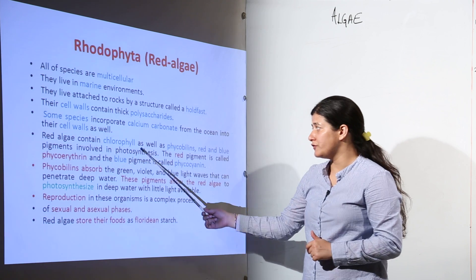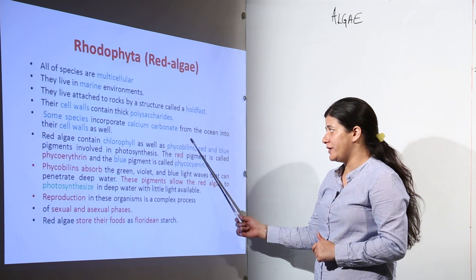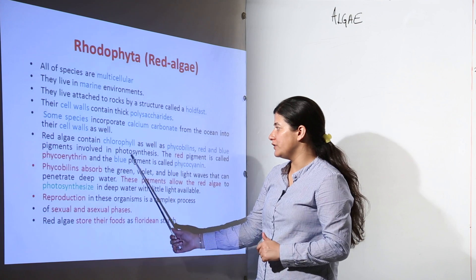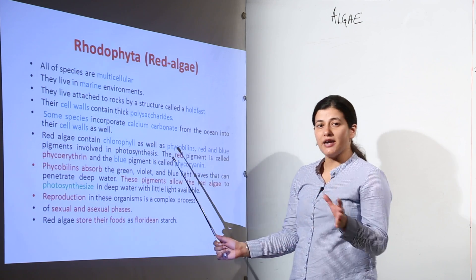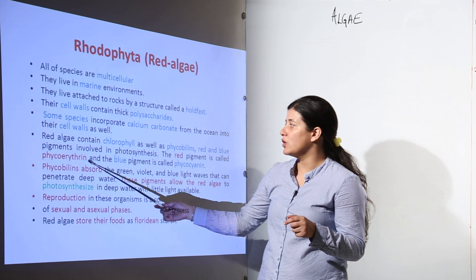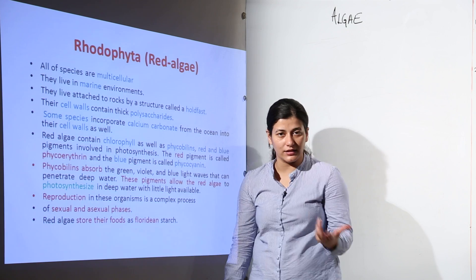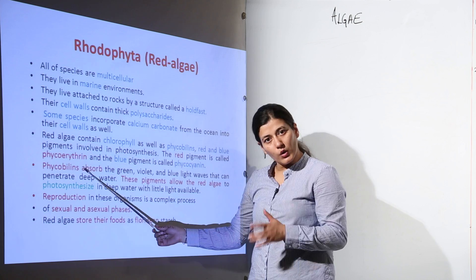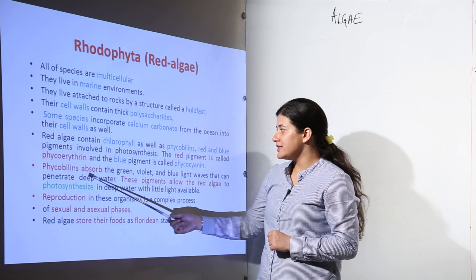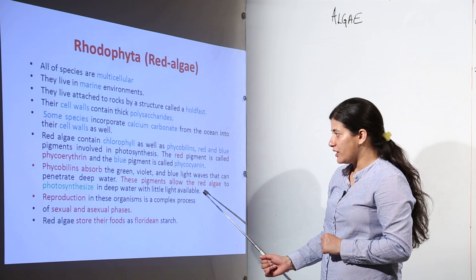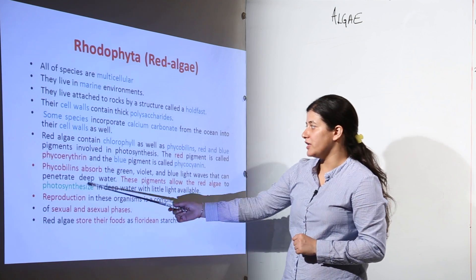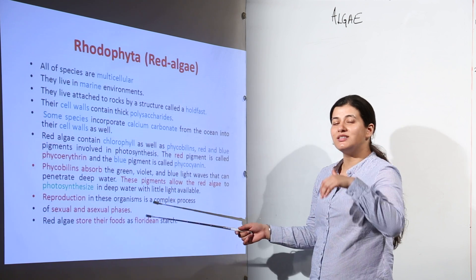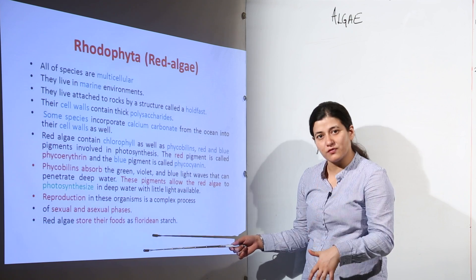Red algae contain chlorophyll as well as phycobillins — red and blue pigments involved in photosynthesis. The red pigment is phycoerythrin, similar to how fucoxanthin is found in brown algae. The phycobillins absorb green, violet, and blue light waves that can penetrate deep water, which is why red algae are found in the deepest parts of the ocean.